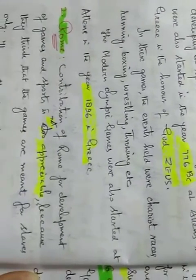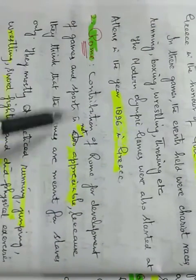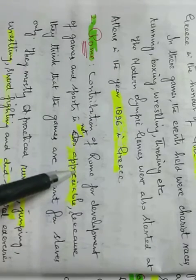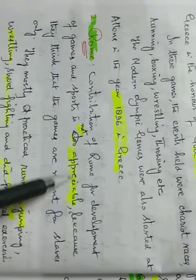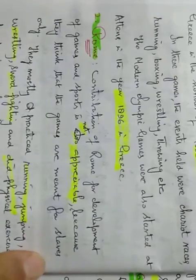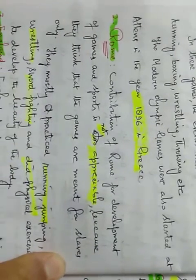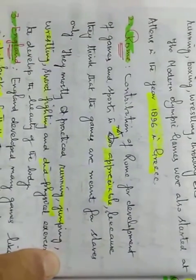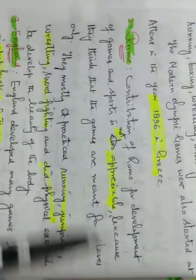The contribution of Rome for development of games and sports is not appreciable. Games were held but those people felt that games and sports were meant for slaves. This is for slaves. This is not appreciable.